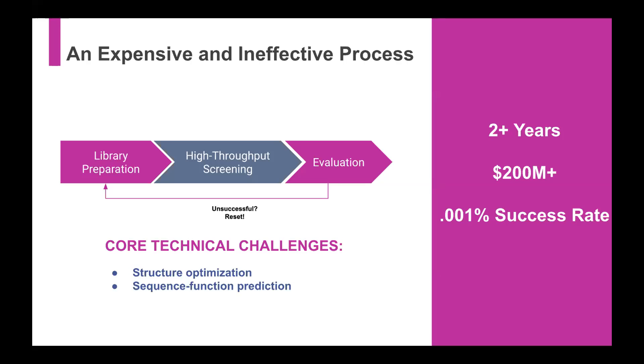But right now, as it stands, it takes two plus years, over $200 million to develop a protein. And the crazy thing is that out of all the proteins that are tested, it's only a small fraction of those that are successful, right? So it really is 0.01% success rate, one in about 10,000 proteins. So it's a very costly and really ineffective, wasteful process for the most part.